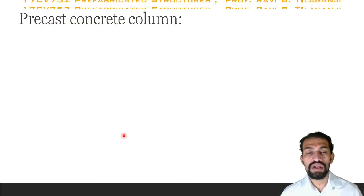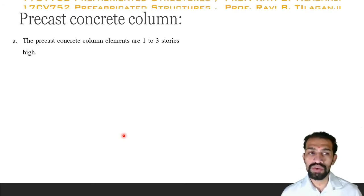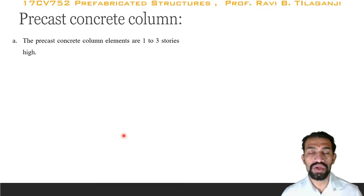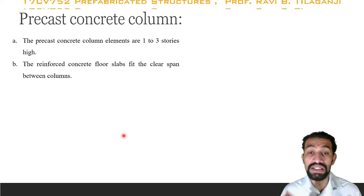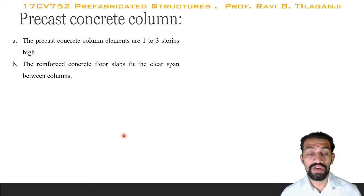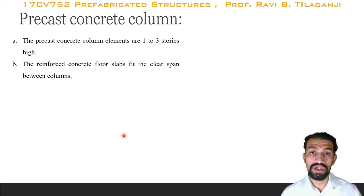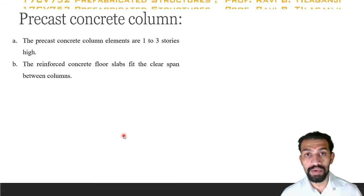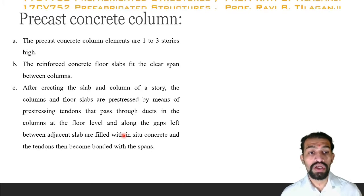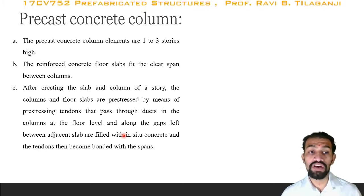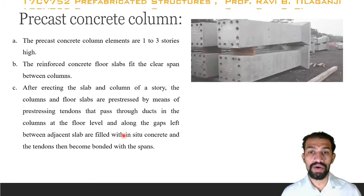Precast concrete column elements are typically one to three stories high. The reinforced concrete floor slab fits the clear span between the columns — measured from clear to clear, not center to center. After erecting the slab and column of a story, the columns and floor slabs are pre-stressed by means of pre-stressing tendons passed through holes provided in the columns.